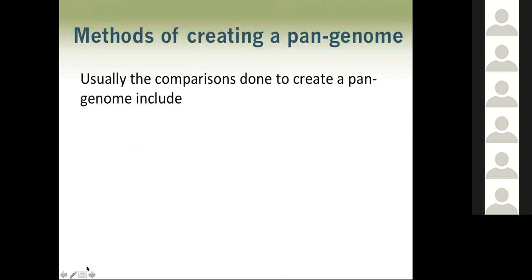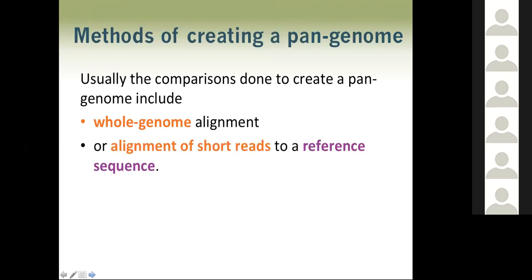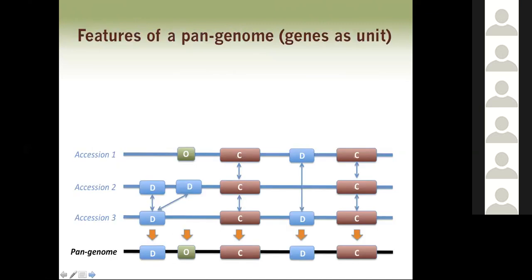The comparisons done to create a pan genome usually involve whole genome alignment, basically BLAST — Mummer is a BLAST-type alignment where you align sequences to each other or to a reference, or you align short reads to a reference. I'm going to focus on pan genomes that use whole genome alignments and use genes as the unit rather than small base pairs.